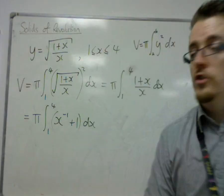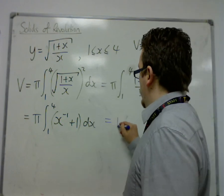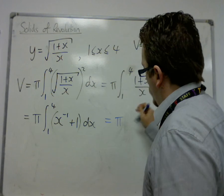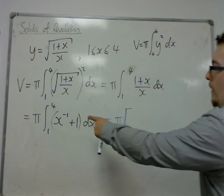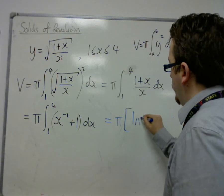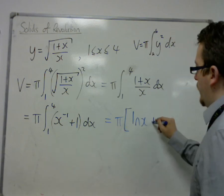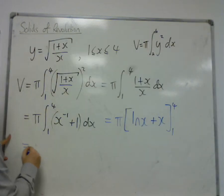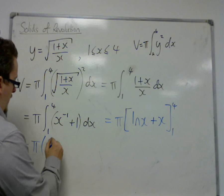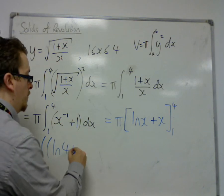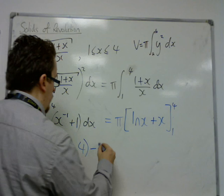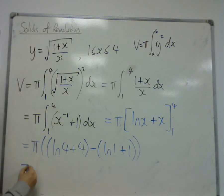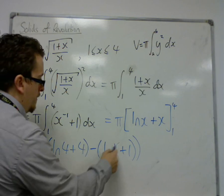Now, we're ready to integrate. So, x⁻¹, 1 over x integrates to ln x. 1 integrates to x. Evaluate between 1 and 4. So, we've got π lots of ln 4 + 4 take away ln 1 + 1. Now, ln 1 is just 0.